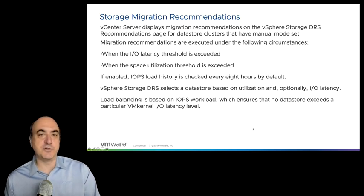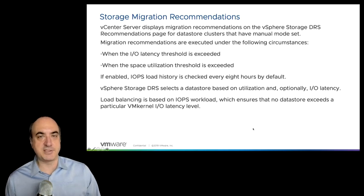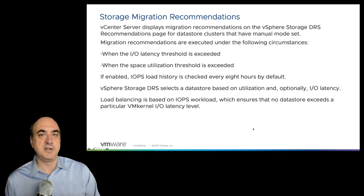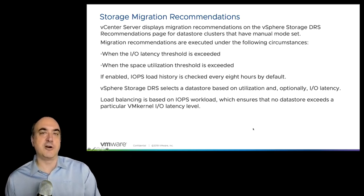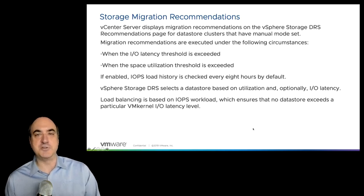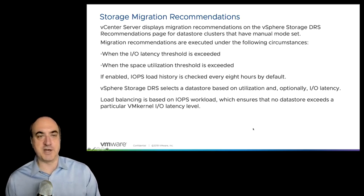Storage IO control deals with unavoidable real-time bottlenecks and creates equalized access for all VMs on the same data store. Storage DRS, on the other hand, looks at long-term potential latency issues and uses storage vMotion to avoid those bottlenecks before they occur.